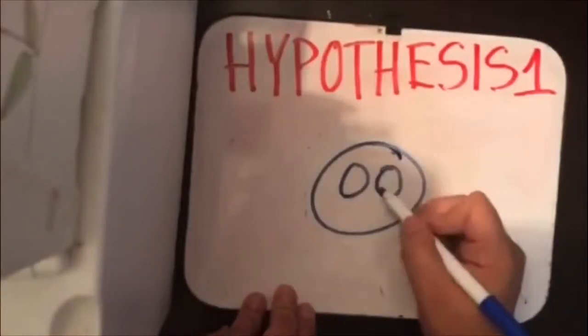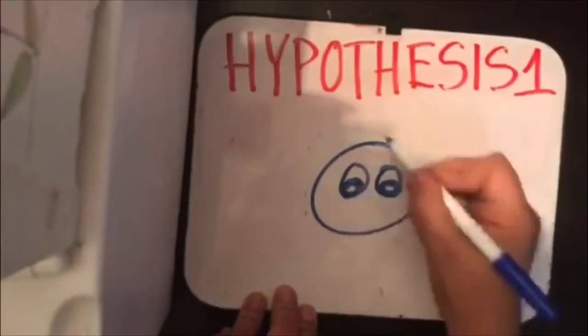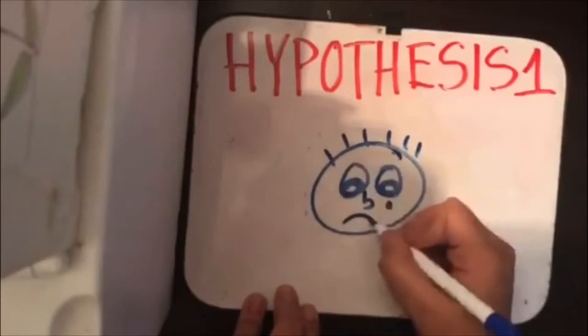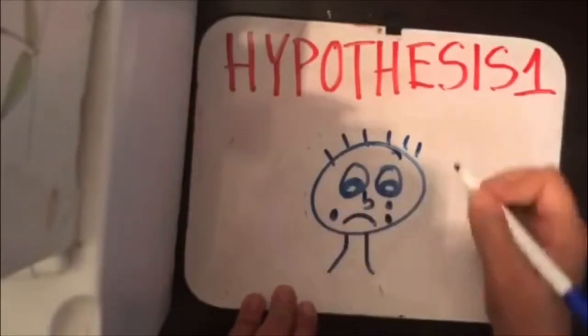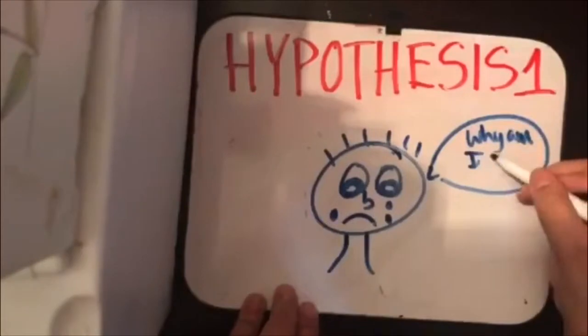Hypothesis one: if a person experienced a state of arousal for which they have no immediate explanation, they will label the state and describe their feeling in terms of the cognition available to them at that time.